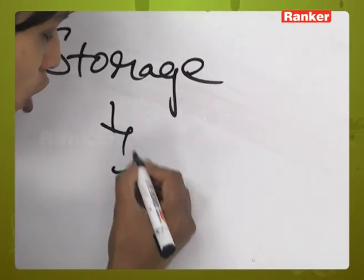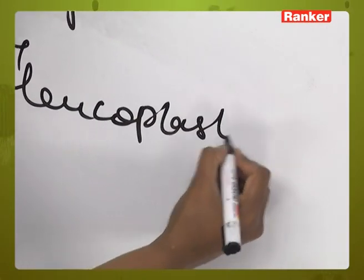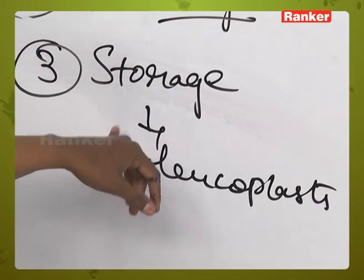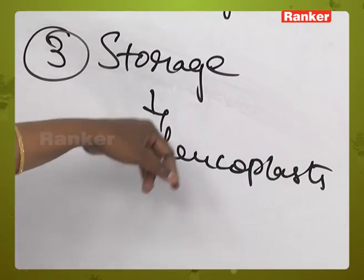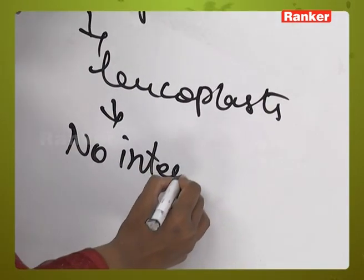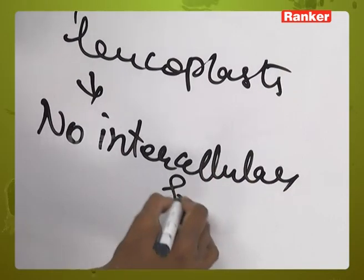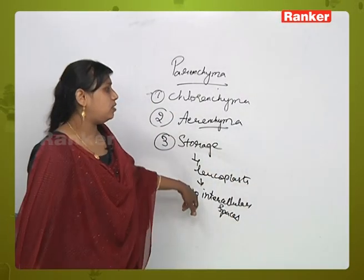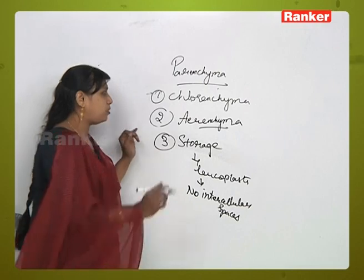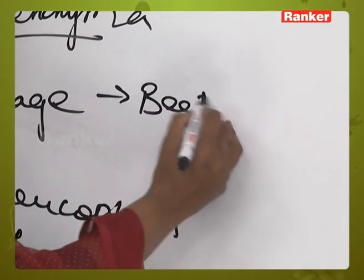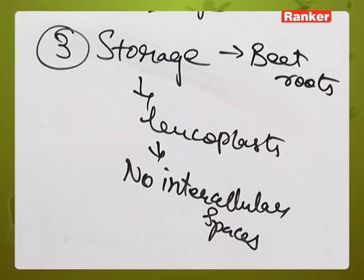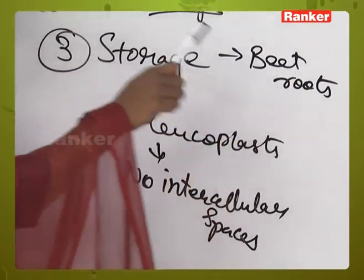Storage parenchyma consists of leukoplast. As the name indicates, it helps in the storage of food materials — either solid or liquid food material. There are no intercellular spaces in storage parenchyma. For example, this type of parenchyma is seen in beetroots.